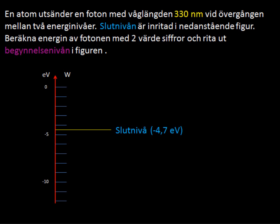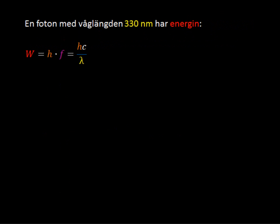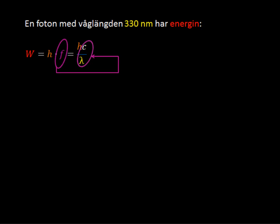In this first part, you see the final state at negative 4.7 electron volts. So let's go ahead and attack the photon part. When you have light that has a wavelength, we can use the standard wave function. Some books won't use W, but the one we're using right now does — if it's something else, don't worry about it, it's the same formula. We know Planck's constant, we know the frequency, and we also know that we can replace the frequency with the speed of light divided by lambda.